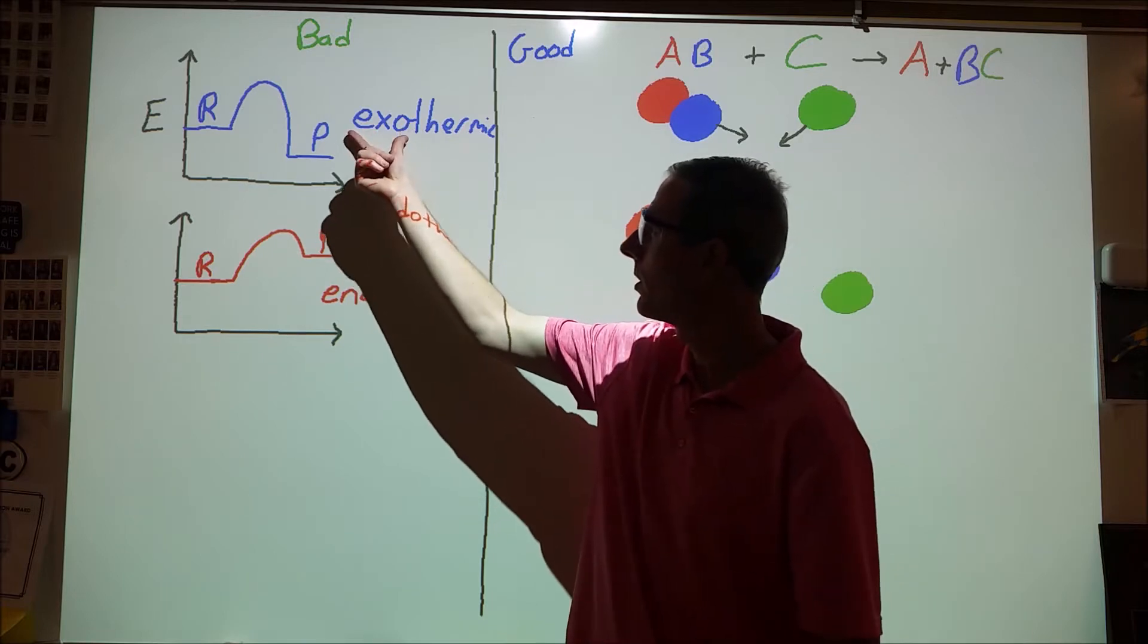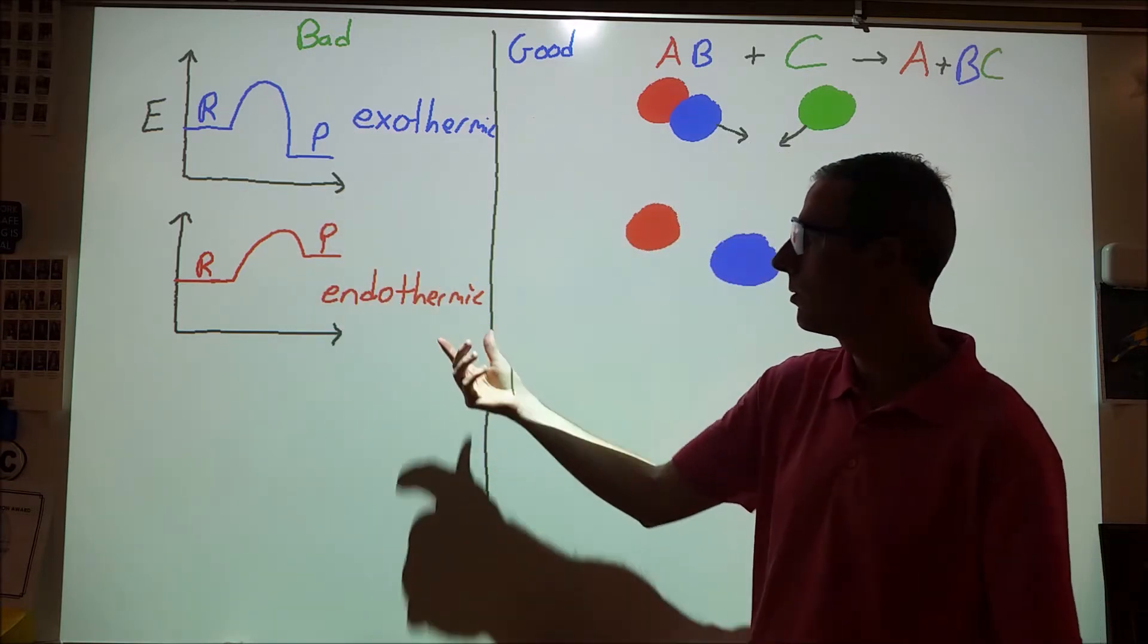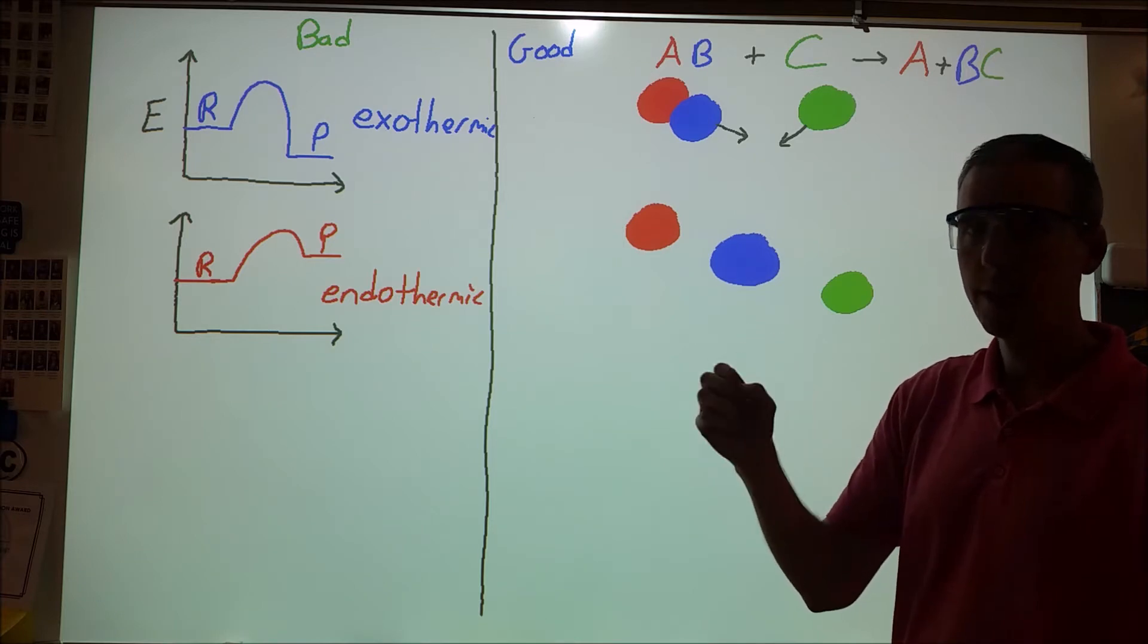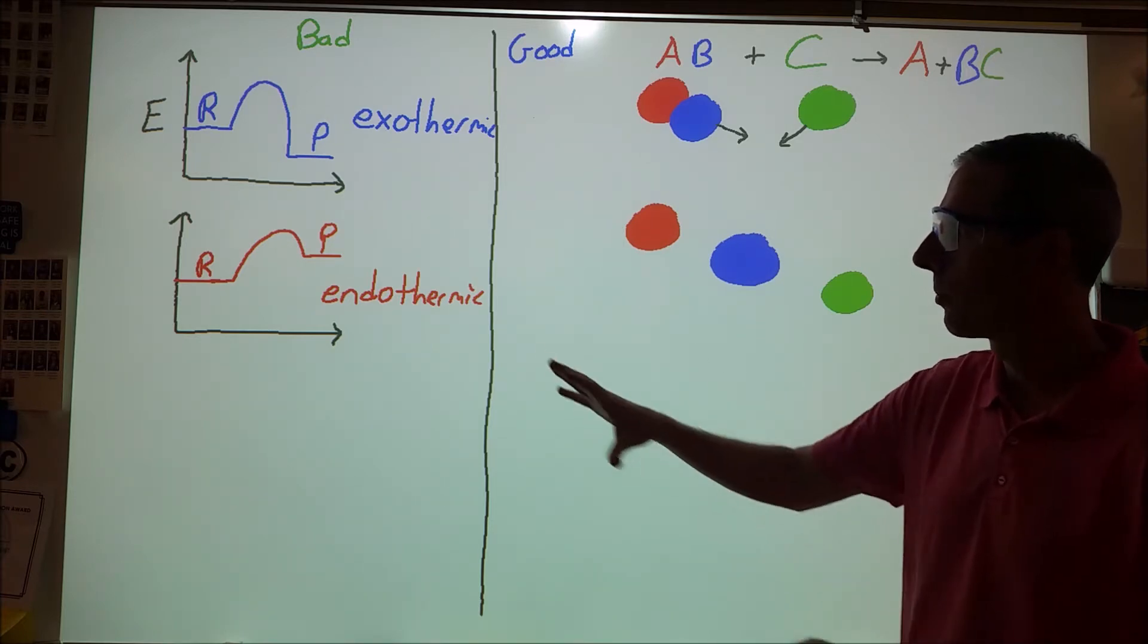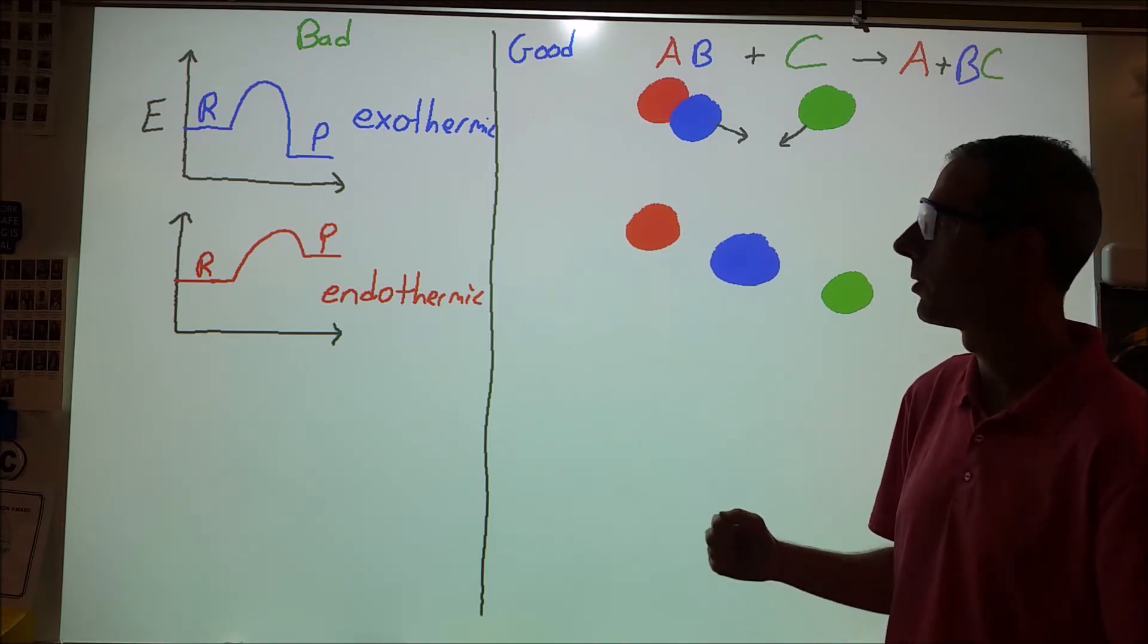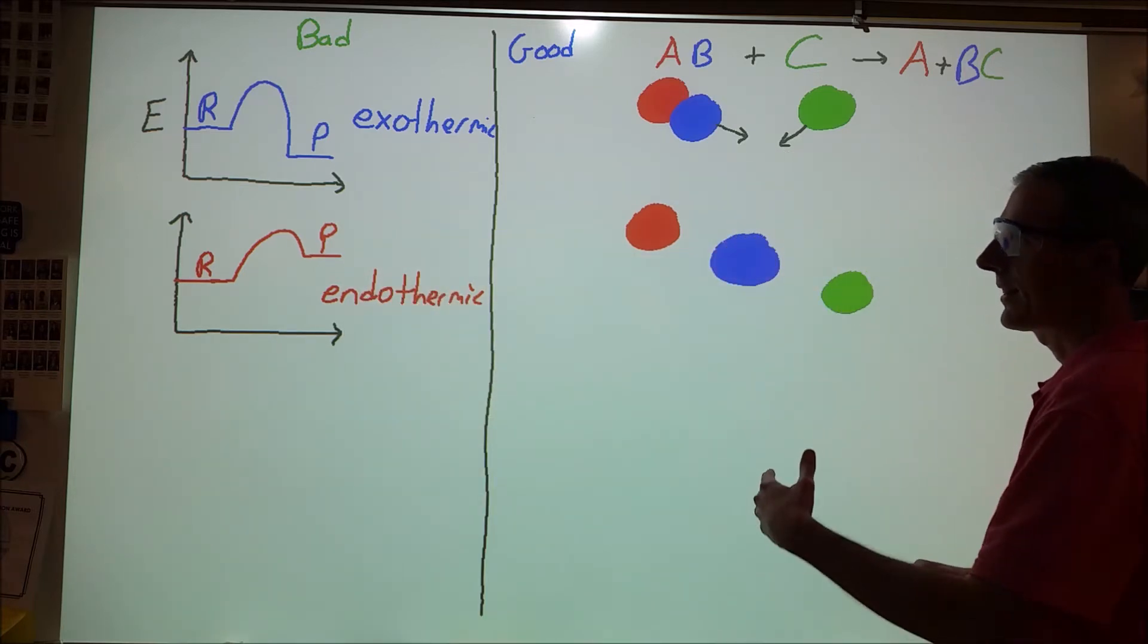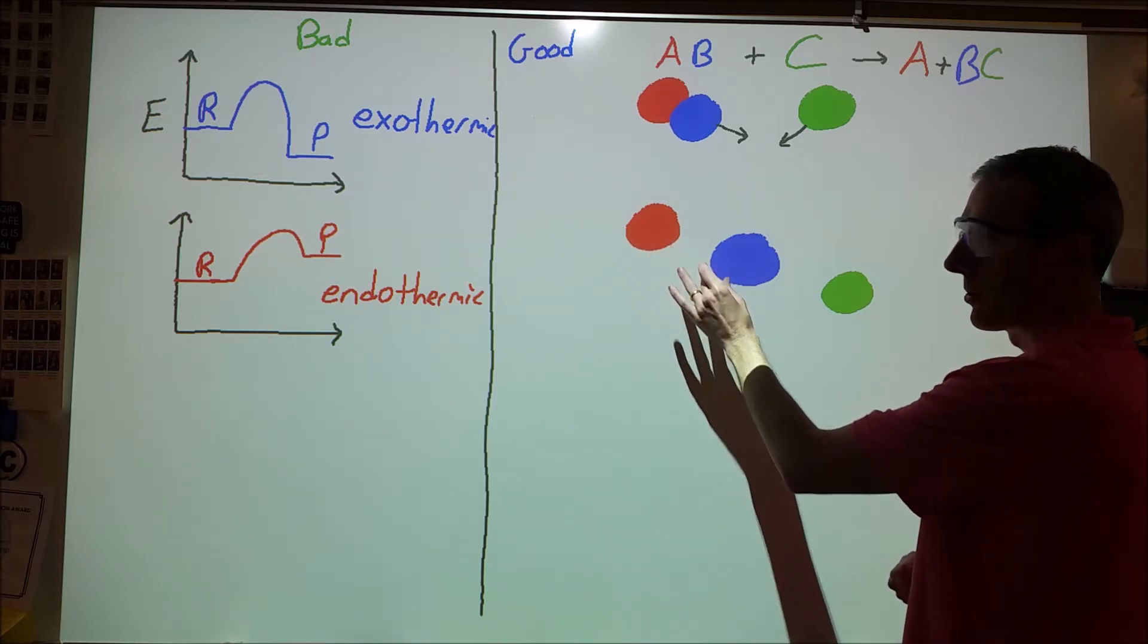So we would talk about exo mimicking exit, endo mimicking into, and then therm, of course, meaning energy or heat. When we did that, we really weren't challenging any student ideas or conceptions of how anything works in reality. There was no particulate model, there was no real actual chemical reactions going on, and one of the ideas that students don't really get that they really need to process is how energy changes as particles move closer or further.